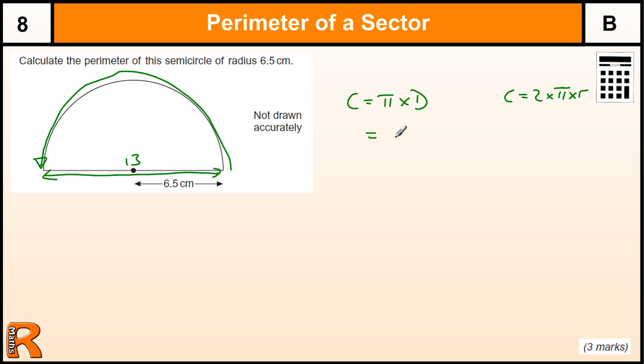Now the diameter is 13, so the circumference is 13 pi. Now we want half of that because we only want half the circle, so we want half of 13 pi, which is 6.5 pi.